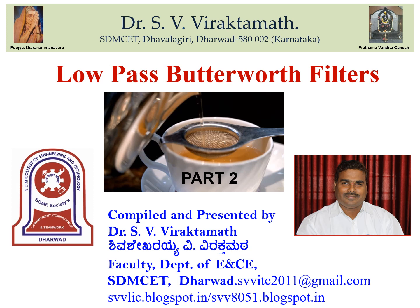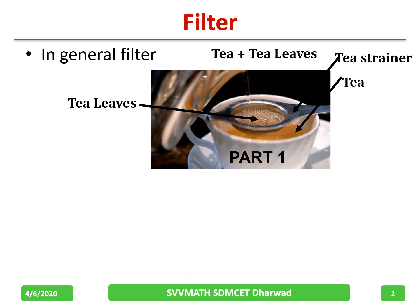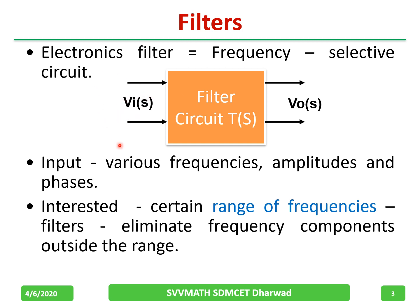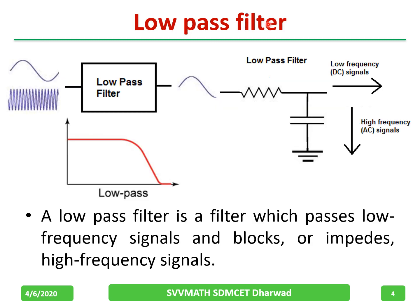Welcome to my channel. In this video we are going to discuss low pass Butterworth filters — this is part one. Basically, an electronic filter selects a particular band of frequencies. All frequencies are given as input, but only the desired frequency components appear at the output. A low pass filter, as the name suggests, passes only lower frequencies.